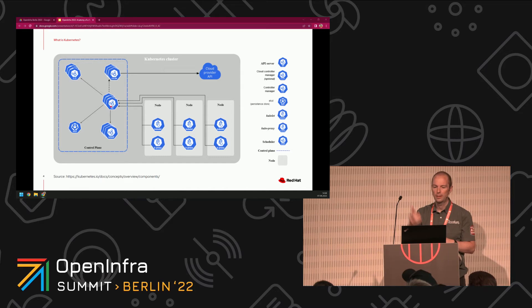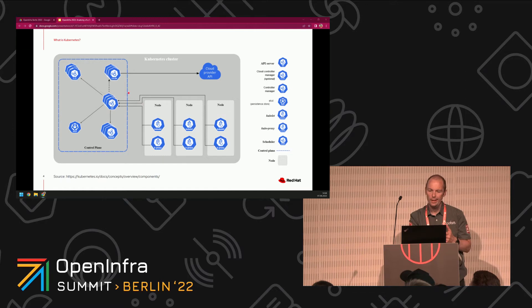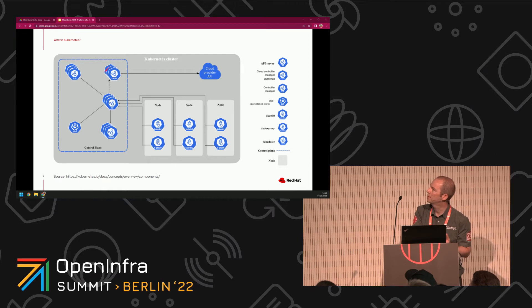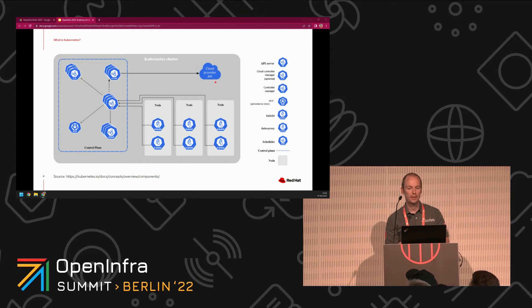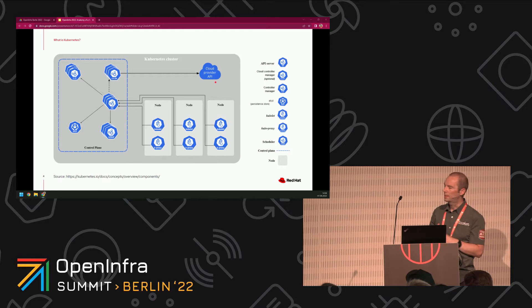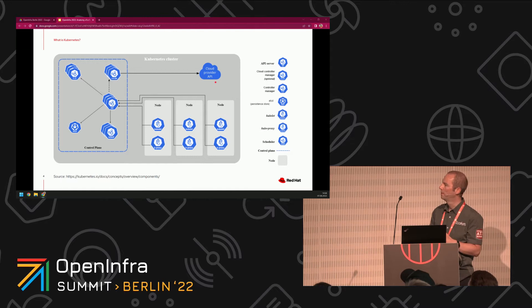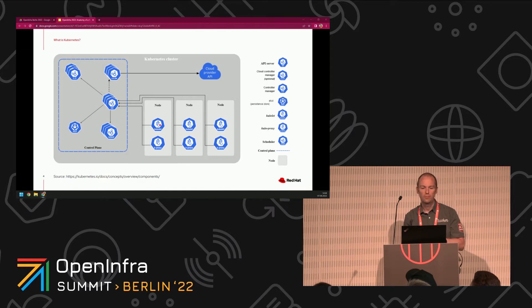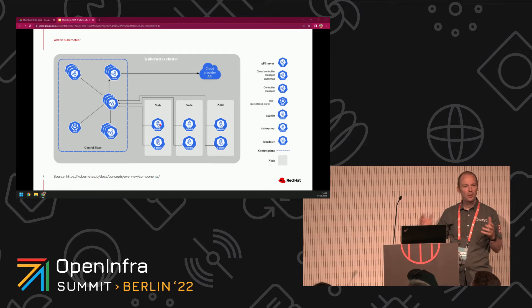The controllers which are vital to Kubernetes itself are running in the control plane. But we're going to be looking at one in particular: the cloud controller manager. This is the controller that talks to the cloud and makes things happen in OpenStack. Your Kubernetes cluster runs on what's called nodes. A node in Kubernetes is a place where pods can run, and the most important thing to know about a node is that it runs a kubelet.